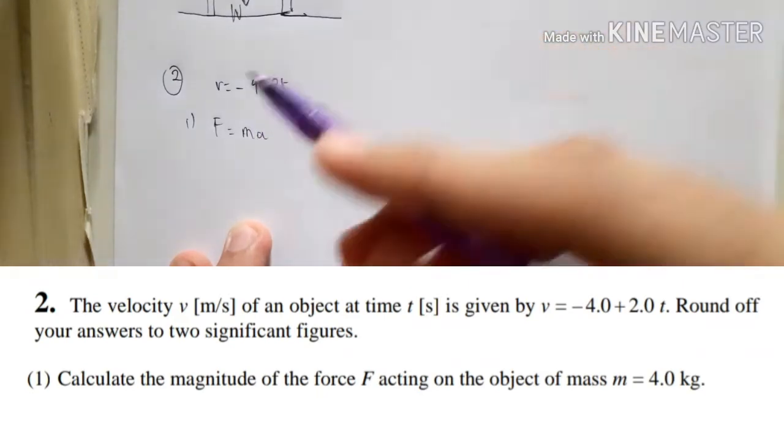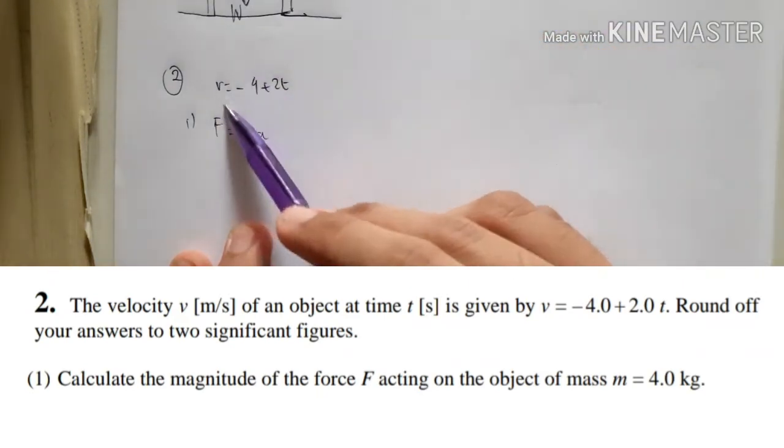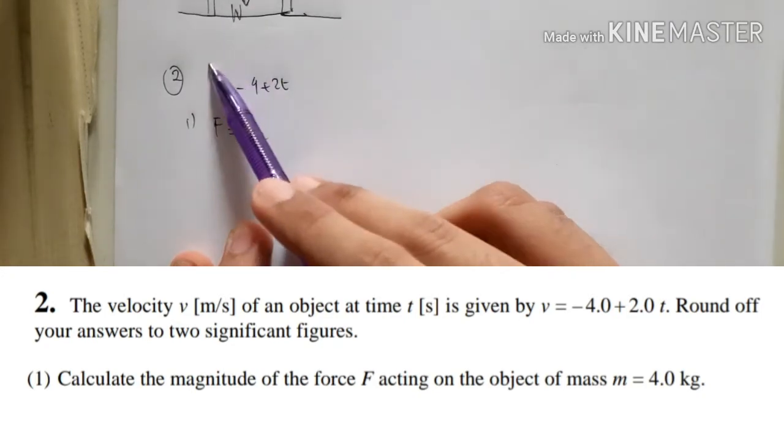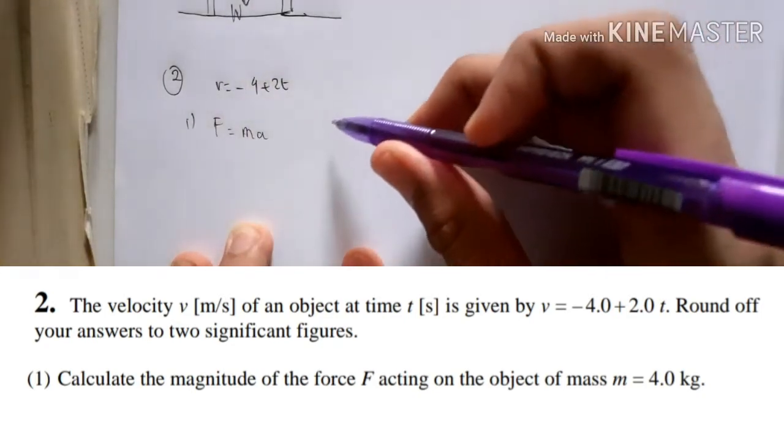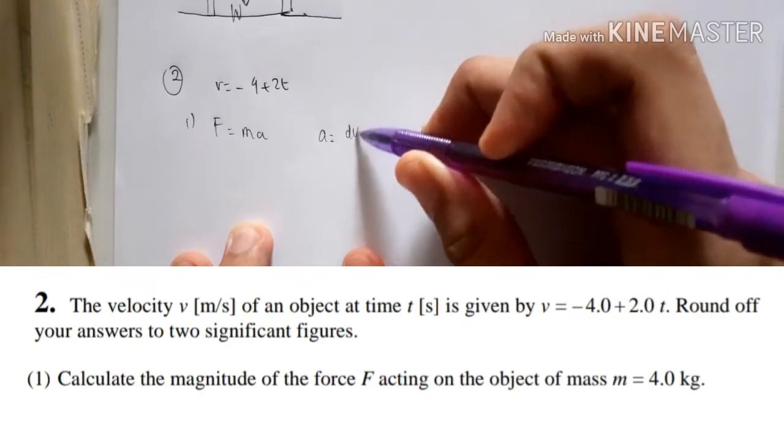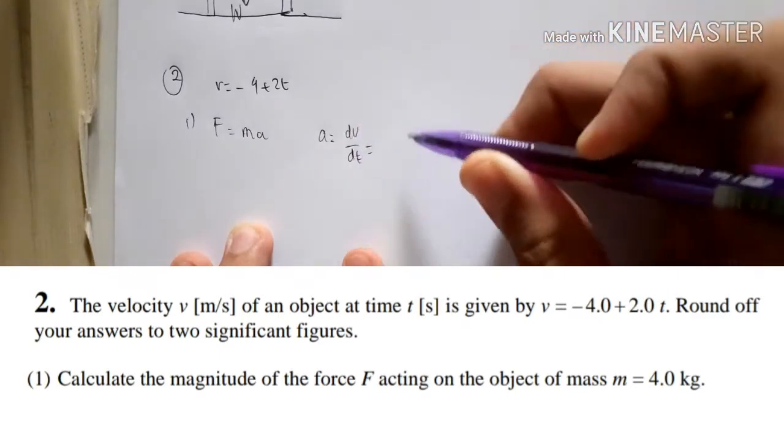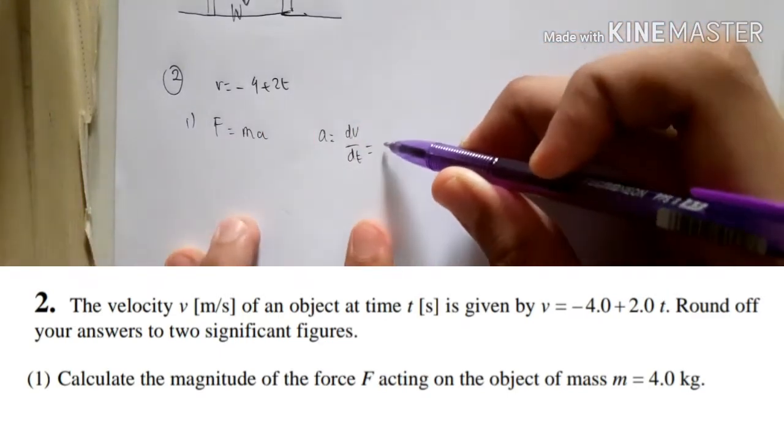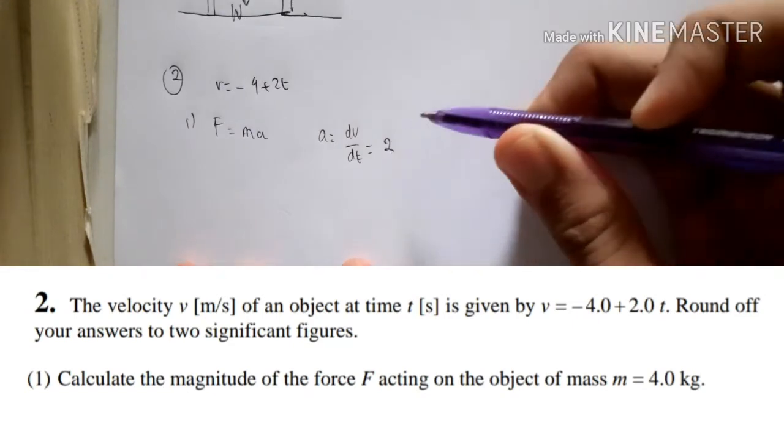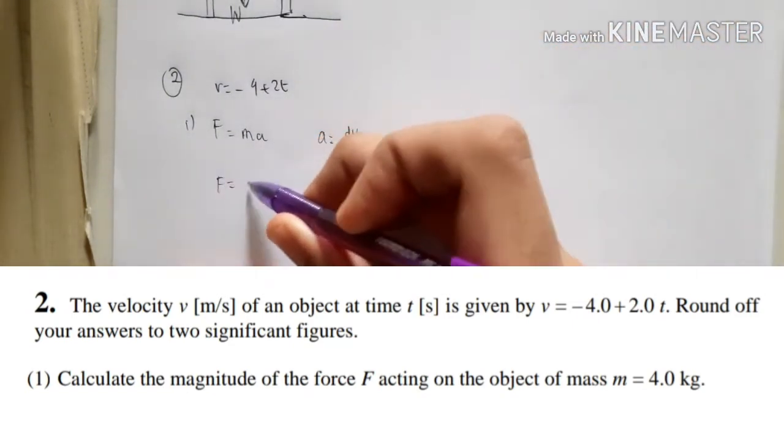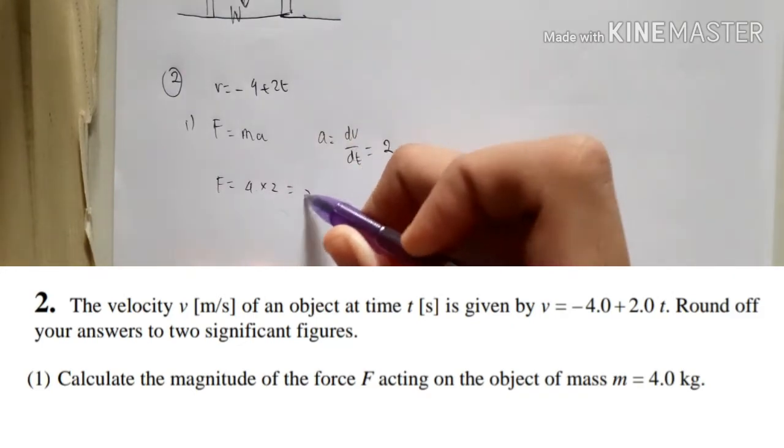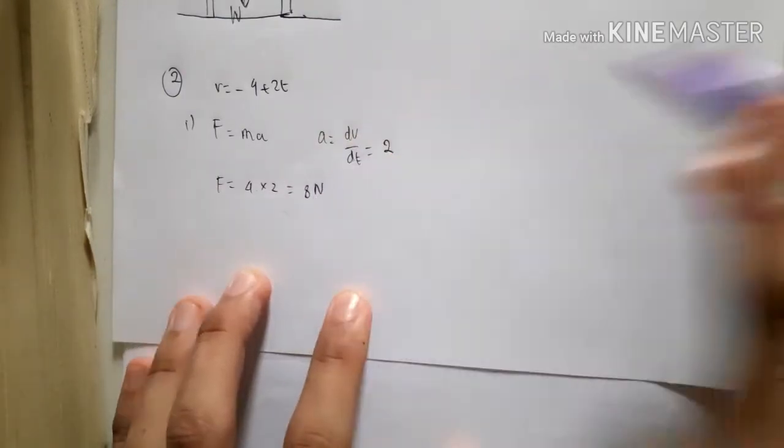But the acceleration here, we could actually take the value of this from differentiation of v. So, a is dv over dt, so that is, we just differentiate that, that will result into 2, right? So, f is 4 times 2, which is 8 Newton.